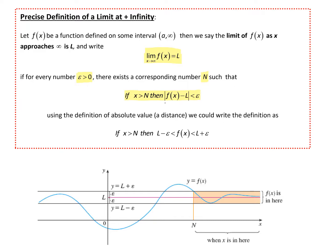Remember that |f(x) - L| refers to the distance of f(x) away from that limit value L. We're saying for any given epsilon greater than 0, if we can find an N — looking at the little graph — if we can find an N and as long as x is greater than N, then our f(x) values will be in this appropriate epsilon neighborhood. That's what it means to have a limit at infinity.